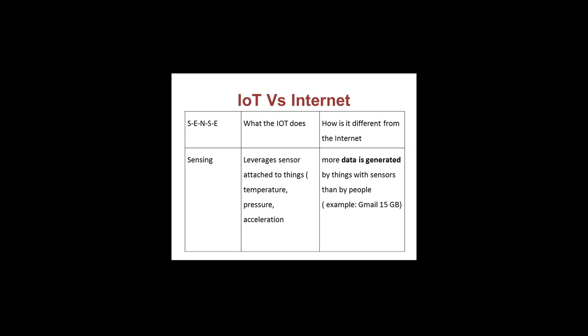IoT generates huge data because it connects devices capable of generating data. For instance, when you create a Gmail account it gives only 15 GB, but if you collect temperature data from 1,000 locations every day, you would use 15 GB in no time. IoT also adds intelligence to manual processes — for example, reducing power usage on hot days. Today if temperature rises or falls, we have to manually go and change our AC conditions, or manually turn off a light we forgot to switch off.